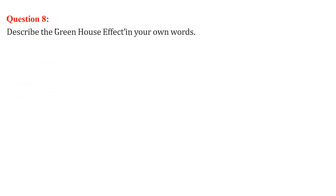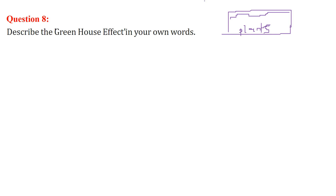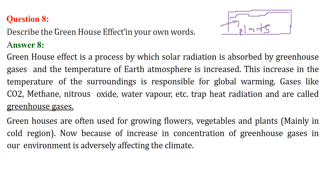Describe the greenhouse effect in your own words. A greenhouse is a concept used in upper latitudes where the weather is always cold — in order to grow vegetables, they create a greenhouse which remains warm so that plants and flowers can grow. Now this scenario is present on our globe, on Earth. The greenhouse effect is a process by which solar radiation is absorbed by greenhouse gases and the temperature of Earth's atmosphere increases.